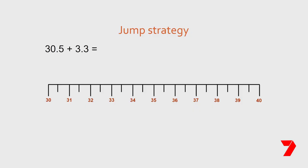Like all problems, there are many strategies we can use to find a solution. Here are two more strategies. Using the jump strategy: the jump strategy requires us to choose a number and break it into its place value parts. In this expression — thirty and five tenths add three and three tenths — we are going to look at the three and three tenths and partition this number into ones and tenths.